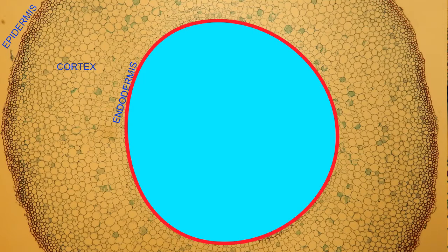Between the endodermis and the epidermis is ground tissue, which is referred to as the cortex, and may serve a number of functions such as storage.